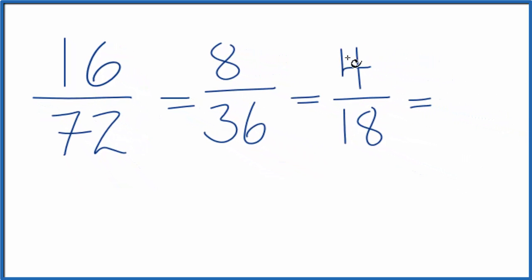Now if I divide by 2 one more time, so I'll have 4 divided by 2, that's 2, 18 divided by 2, that gives me 9. I get 2/9. So I've simplified 16/72 or 16 over 72 down to 2/9. I can't get this any simpler. I can't put this in any lower terms, so this is the simplified version of 16/72.